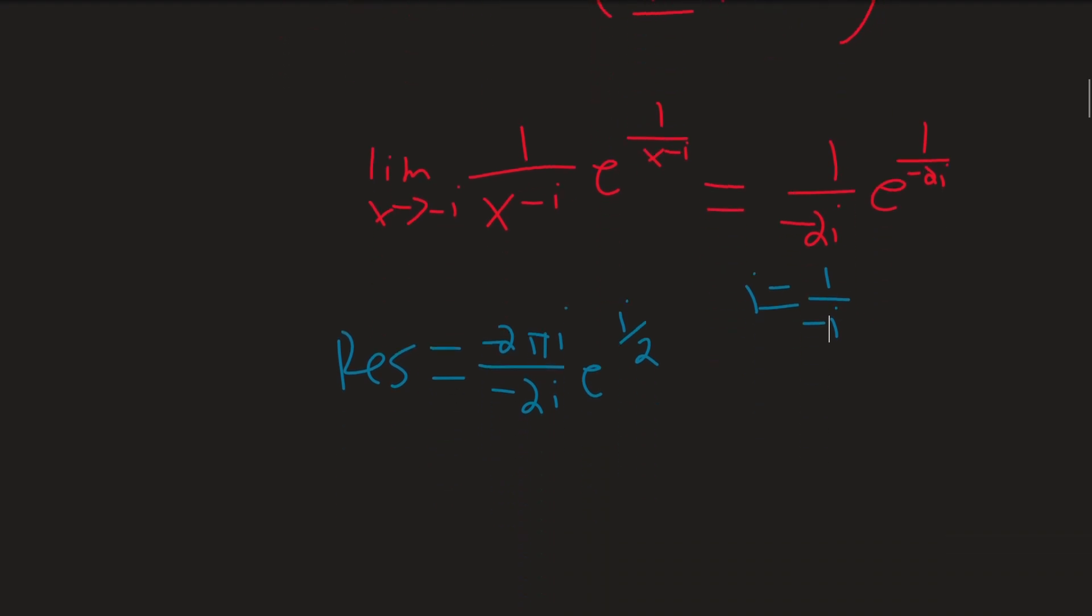And simplifying this even further, we find that, sorry, this actually isn't our residue. I do apologize. Our integral, sorry. Our integral is equal to negative 2πi times the residue. But yes, simplifying this, we find that the negatives cancel, the 2's cancel, and the i's cancel, leaving us with π times e to the i/2.